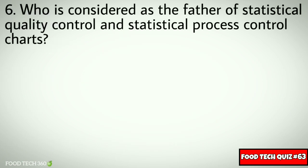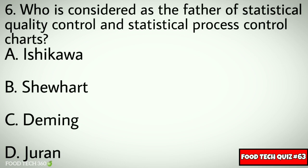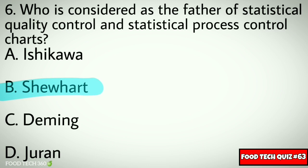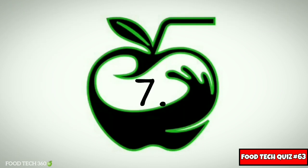Question No. 6. Who is considered as the father of statistical quality control and statistical process control charts? Options: A. Ishikawa, B. Shewhart, C. Deming, D. Juran. Correct answer: B. Shewhart.